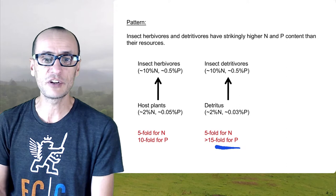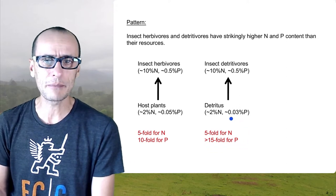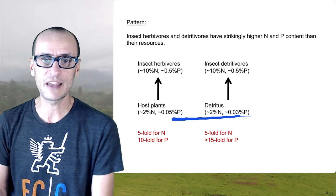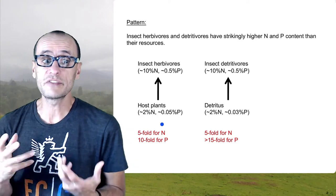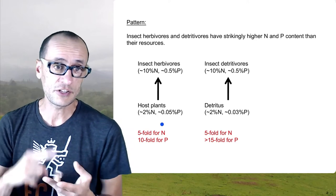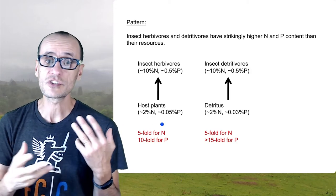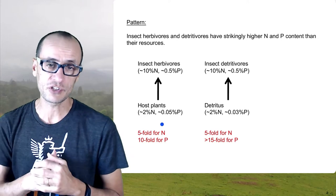And this is even more magnified for insects that are detritivores because detritus, dead plant material, has even lower phosphorus concentration than plants do. All organisms are comprised of these same major elements, carbon, nitrogen, phosphorus. But the relative balance of these elements differs vastly between organisms occupying different trophic levels.